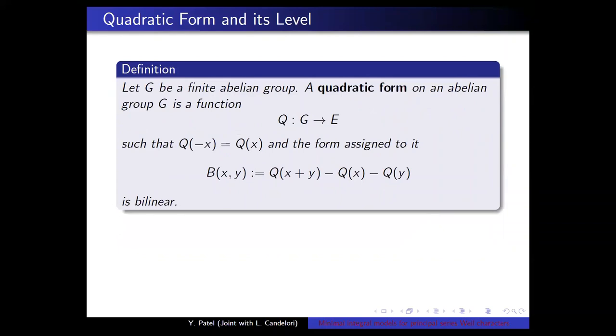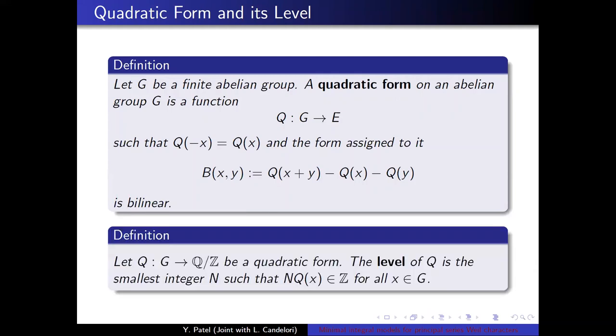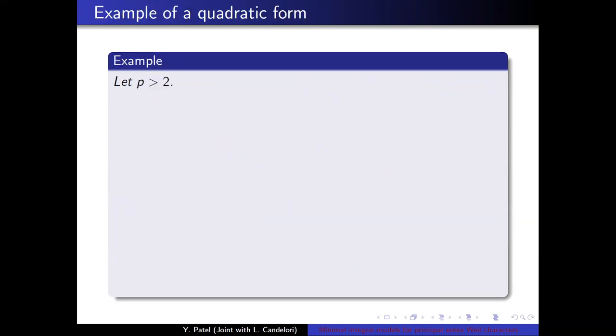And then a definition of quadratic form. Let G be a finite abelian group. A quadratic form on an abelian group is a function that's even and has a form associated to it that's given by this expression that's bilinear. And then the level of a quadratic form is the smallest integer n such that n times a quadratic form is an integer for all elements in the group G.